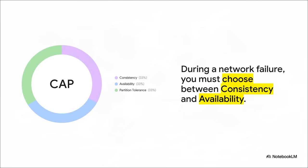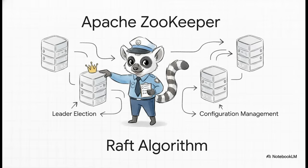During a network failure, you can't have both. You have to choose. And that's exactly where tools like Apache Zookeeper or algorithms like Raft come into play. You can think of them as the digital traffic cops for the whole cluster. They're built specifically to manage these tough trade-offs, helping the system do critical things like elect a leader or manage shared settings, all while navigating the rules of the CAP theorem.